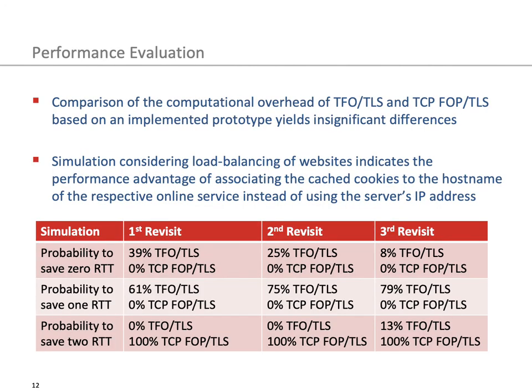To evaluate the performance of the proposed TCP fast open privacy protocol, we implemented a prototype and compared it with respect to computational overhead to the TCP fast open protocol. We found only insignificant differences between TCP fast open over TLS and TCP fast open privacy over TLS. Furthermore, we conducted a simulation which considered the studied load balancing of the Alexa top million websites that support TCP fast open.